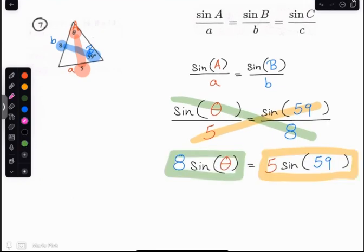Now I need to get that theta by itself. But I have 8 times theta, or 8 times sine of theta, sorry. So I'm going to go ahead and divide both sides by 8.